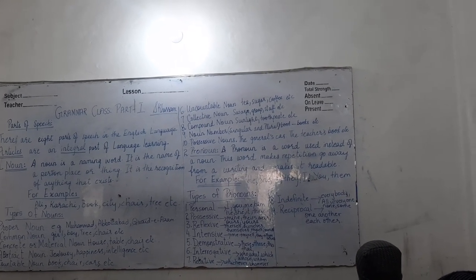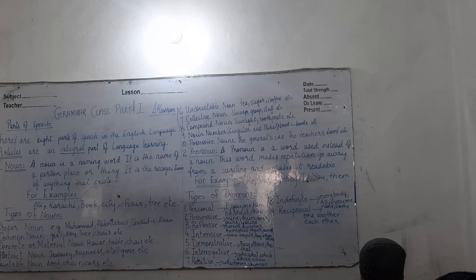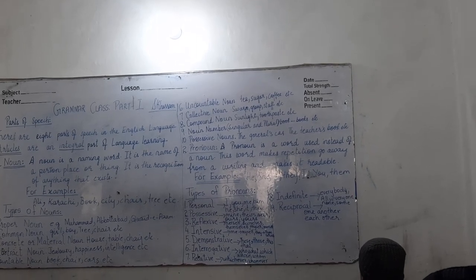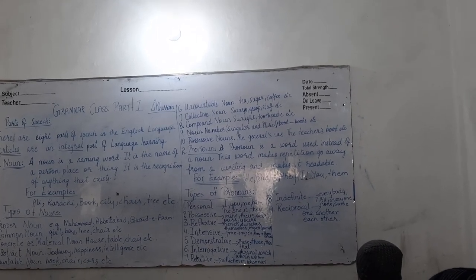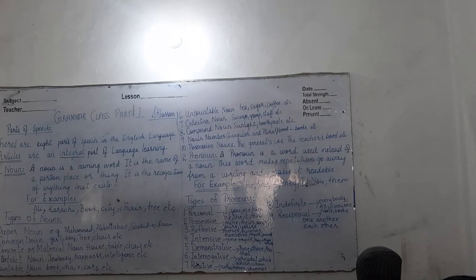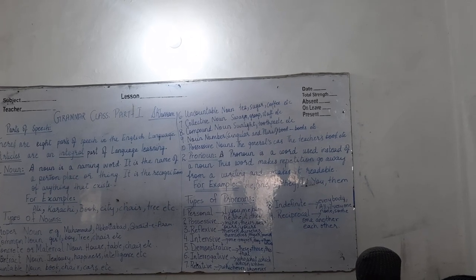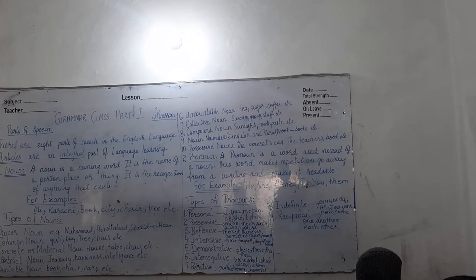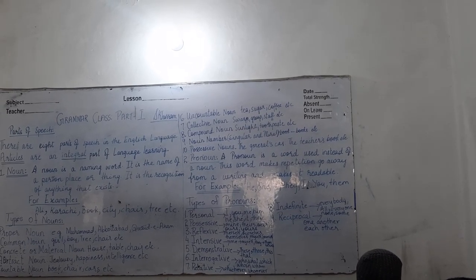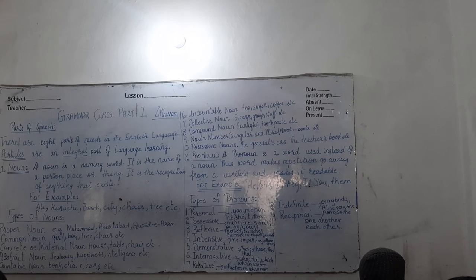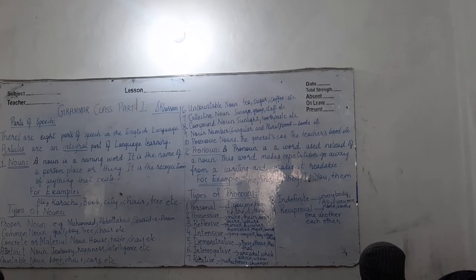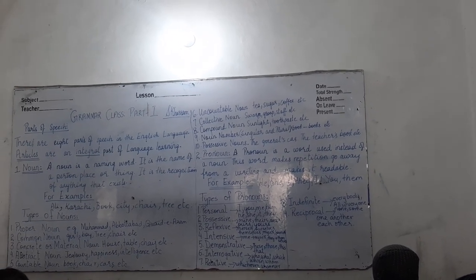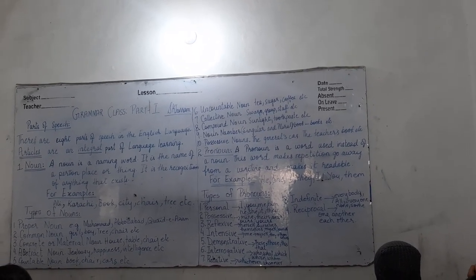Next is possessive pronouns. Possessive pronouns are pronouns that show ownership — in other words, something belongs to someone. Examples: my, mine, your, yours, his, hers, its, ours, their, theirs, etc.